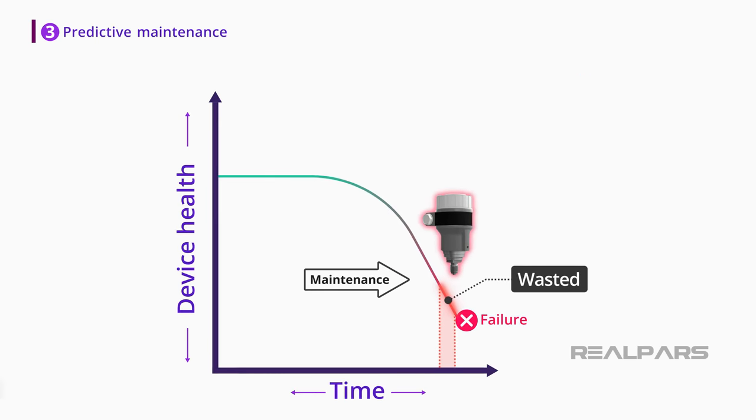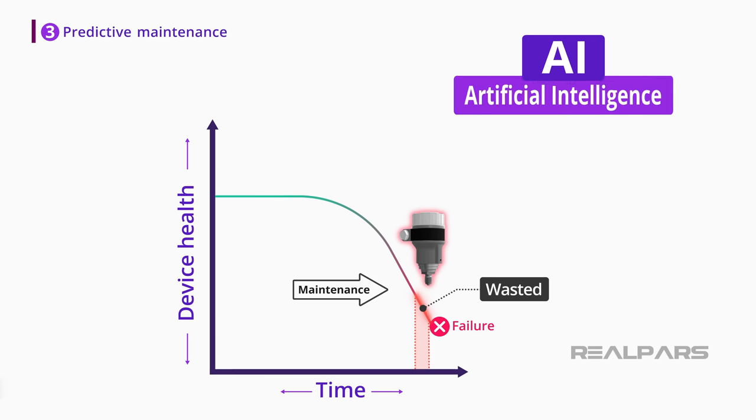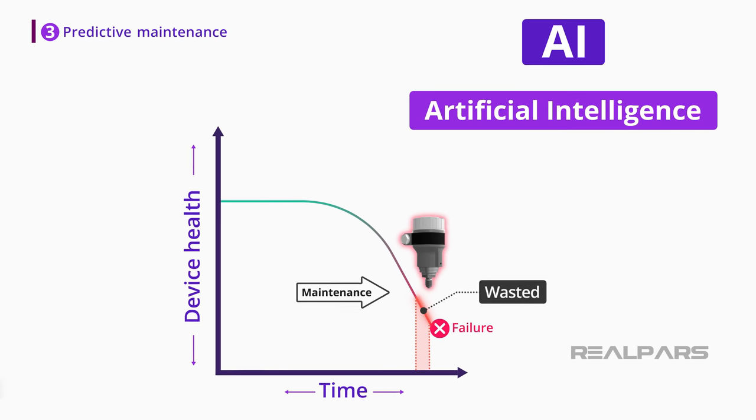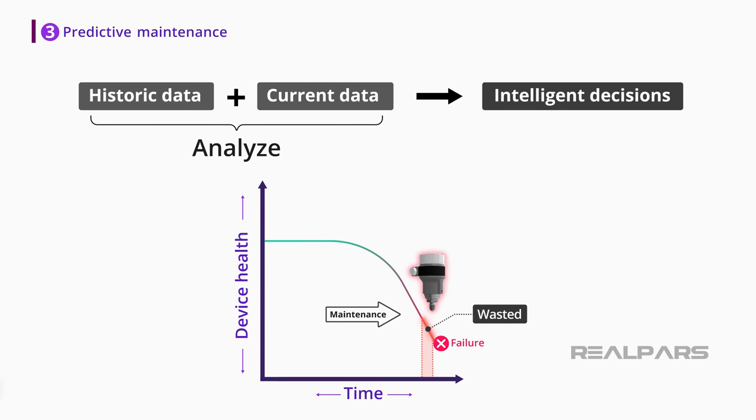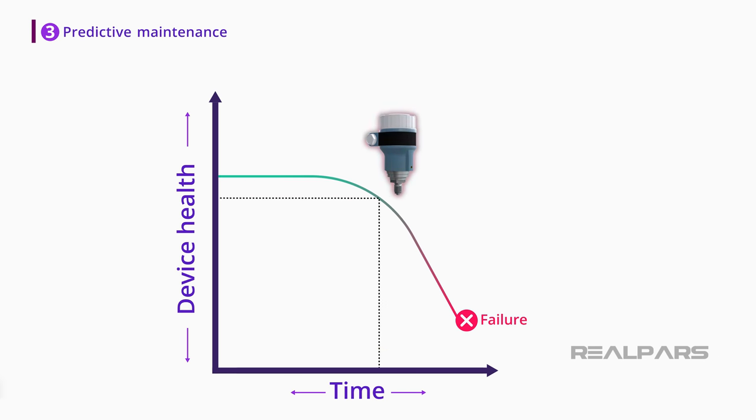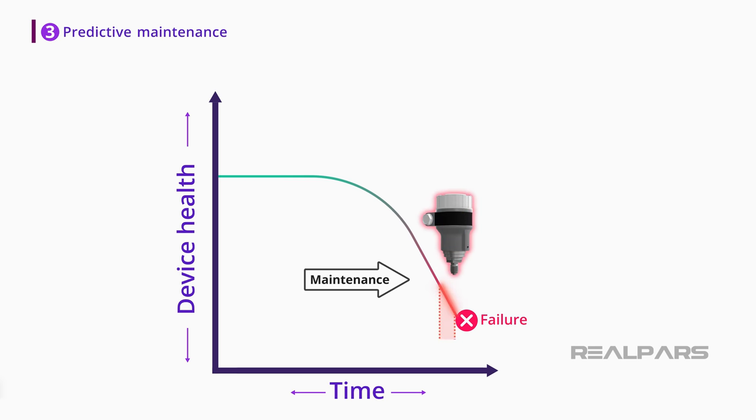The fancy term that we currently use or maybe overuse for utilizing this data is AI or artificial intelligence. But the basic principle comes down to analyzing historic and current data and making intelligent decisions for the future. One of these intelligent or smart decisions that we can make is to predict when a similar new device will fail in the future and perform maintenance right before that, hence predictive maintenance.